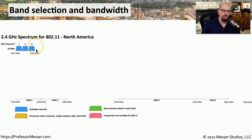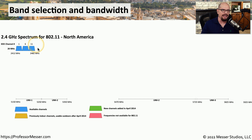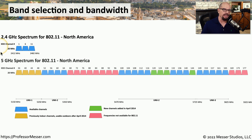These are the only channels available in 2.4 gigahertz — just three to choose from. If you're in an apartment complex with many 802.11 wireless networks, you'll easily find a lot of activity on all three of those channels. Because of these limitations for 2.4 gigahertz, we had to find other available frequencies to use, so we started using the 5 gigahertz spectrum.